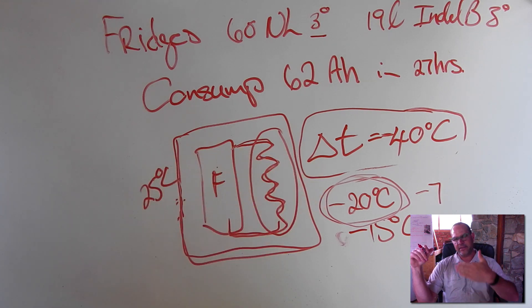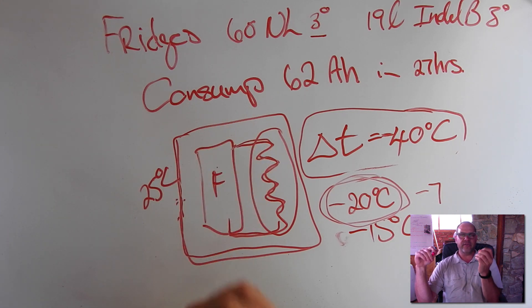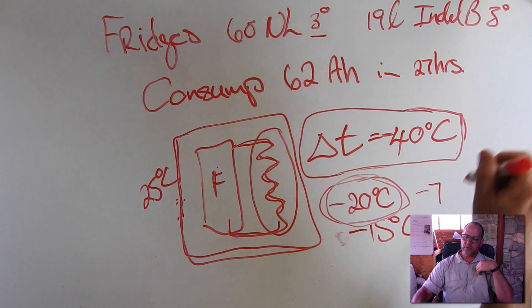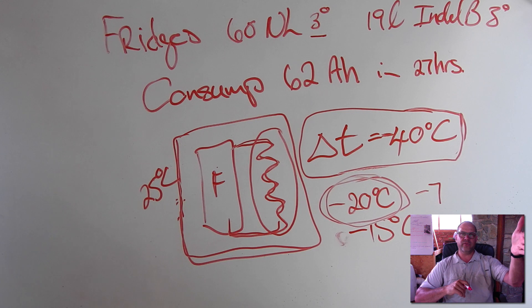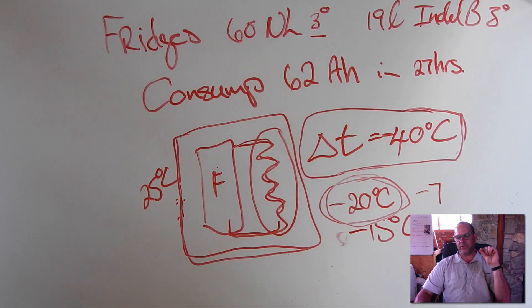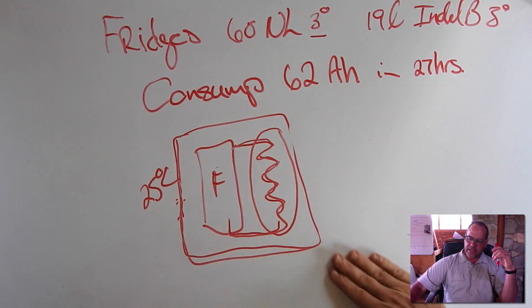So think about how does the fridge actually achieve the delta T of minus 40. So remember, if I set a temperature, that is just a goal. That's my instruction to the fridge. And the fridge will then have to work to get there. But it can only do a maximum of minus 40 degrees from outside. So if you want to do an experiment, go to your fridge, take a thermometer and put it next to your fridge when you're driving and you're camping. And that thermometer will tell you whatever the temperature is around the fridge. And if you then deduct your 40 degrees Celsius, you will understand where you can get to with your fridge.